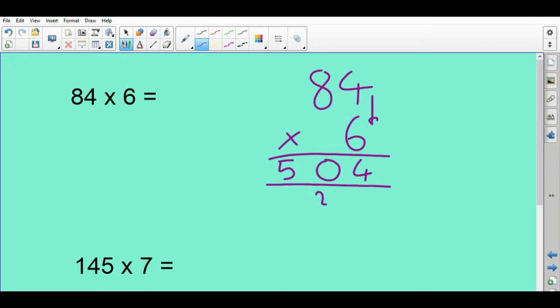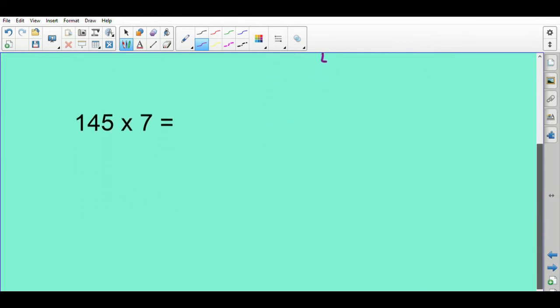Here's our answer. Again, we can do a bit of estimating and just double checking that we're in the right area. So I could do 84 times 5. So I know 84 times 10 is 840. If I half that, I get 420. Well, I'm doing a bit more than that. I'm doing another lot of 84. 84 add 420 is 504.